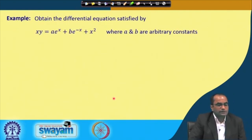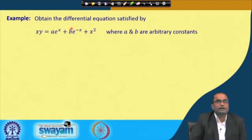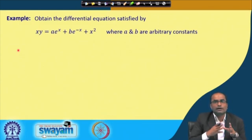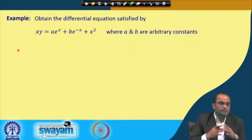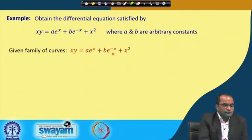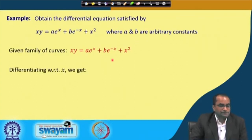We consider this example: obtain a differential equation satisfied by y = ae^x + be^(-x) + x². This is a two-parameter family of curves with arbitrary constants a and b. So we expect the corresponding differential equation to be a second order differential equation when we eliminate these two constants after differentiating the relation.